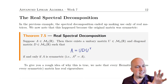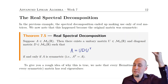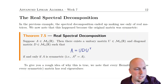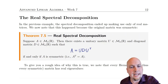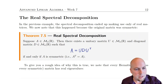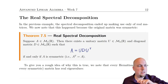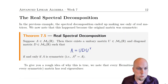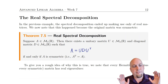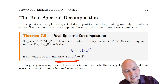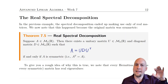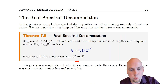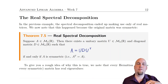This is the same as the complex spectral decomposition from a couple lectures ago with a couple minor tweaks. First, U and D are real instead of complex. We used to have U star on the right, but now it's just U transpose — because U star equals U transpose when U is real. The final tweak is that this holds if and only if A is symmetric, whereas for the complex spectral decomposition the condition was that A had to be normal.